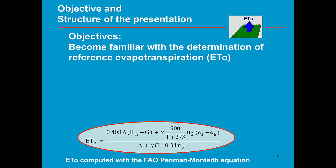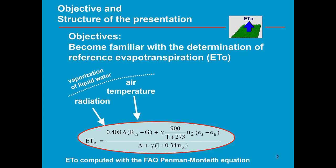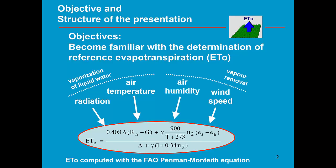The Penman-Monteith equation requires information about the energy sources, like radiation and air temperature, which quantify the vaporization of liquid water. Additionally, we need information about air humidity and wind speed because they quantify the vapor removal. Evapotranspiration consists of vaporization of liquid water and vapor removal, described by the energy term and the aerodynamic term.